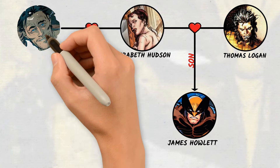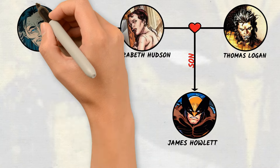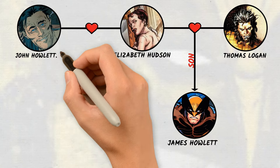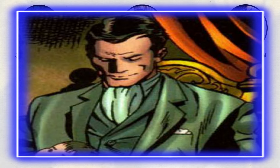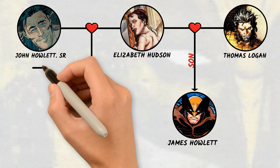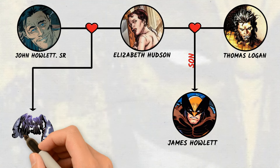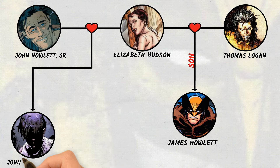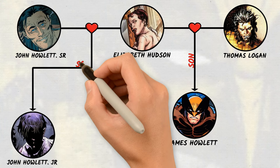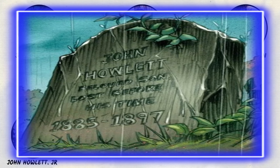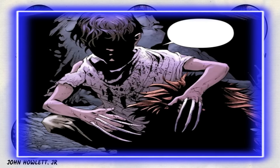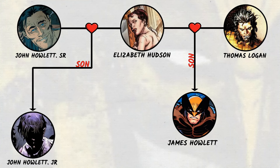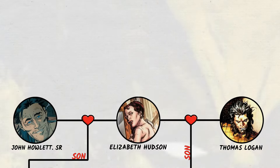Elizabeth was married to John Howlett Sr., a rich man who made his riches through hard work and the inherited fortune of his father. He was killed by Thomas Logan when he tried to stop him from taking Elizabeth. Elizabeth and John's firstborn son, John Howlett Jr., was born a mutant who died at an early age from unexplained causes. It was indicated that John Sr. was the one who murdered John Jr. when he attacked his mother, and his father was unable to defend her.